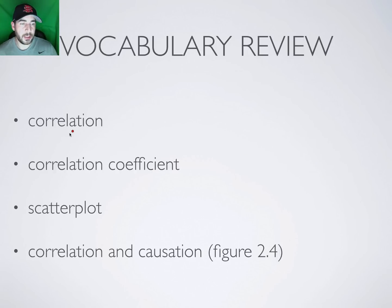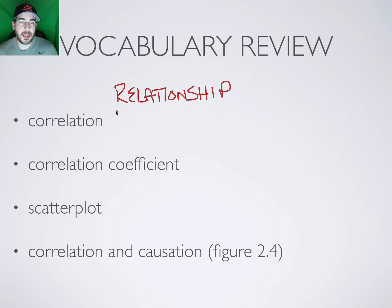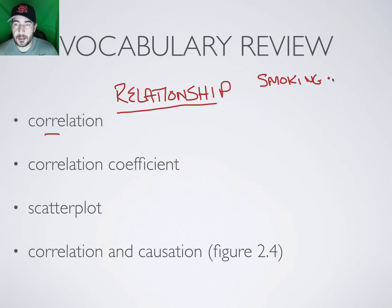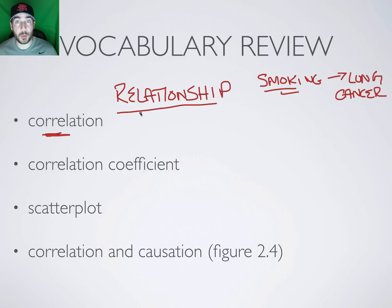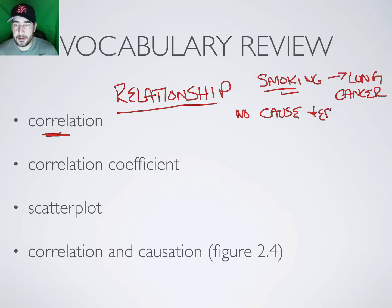First is correlation. A correlation is the relationship between two variables — and a relationship is not cause and effect. For instance, there is a correlation between smoking and lung cancer. There are no experiments that say 100% smoking causes lung cancer, but plenty of studies show that people who smoke tend to have higher incidence of lung cancer. A correlation is a relationship that can be strong or weak, but it does not show cause and effect.